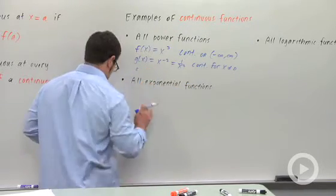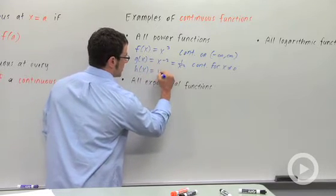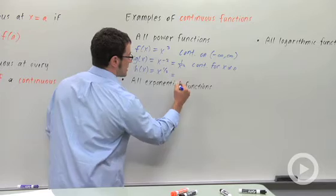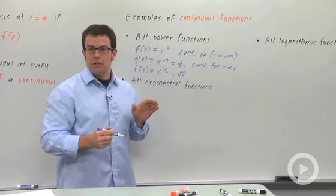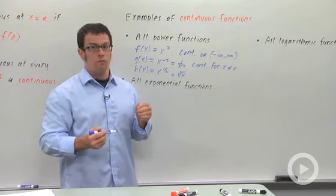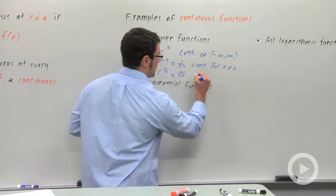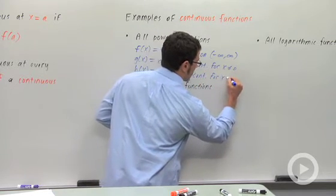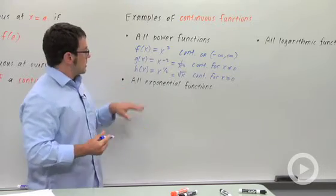And how about one more? h(x) = x^(1/2). This is the same as the square root of x. It is a power function. This is only defined for x ≥ 0, but it's continuous everywhere it's defined, continuous for x ≥ 0. Remember, all power functions are continuous.